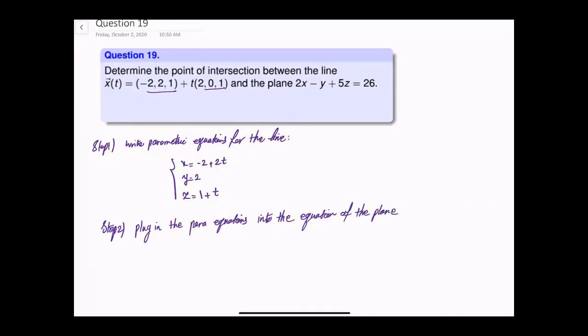So let me just write the equation for the plane. For x you put -2 + 2t, and this is all multiplied by 2.